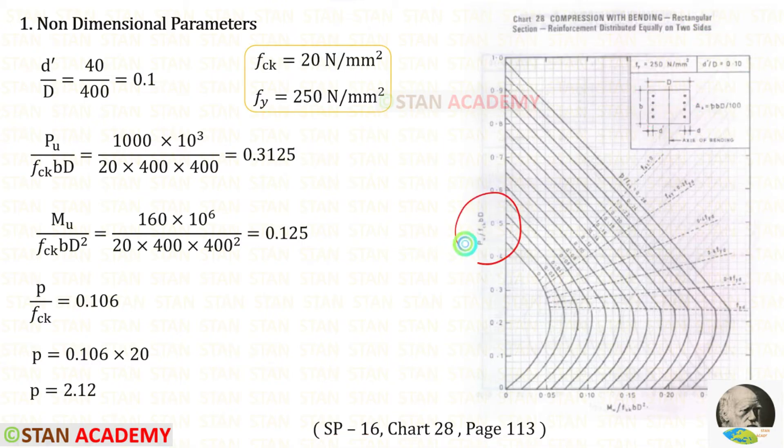From the chart we can write these two terms. In these two terms we know all of the values. Let us apply them. We know that it is a square section. The values of b and d are same, which are 400.